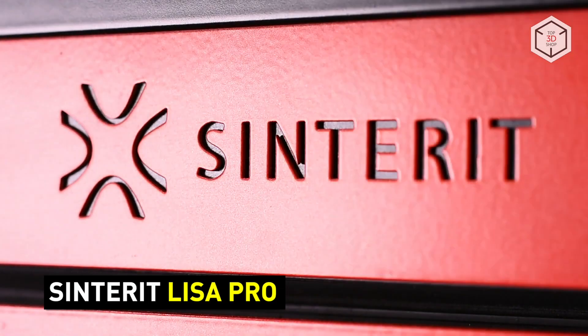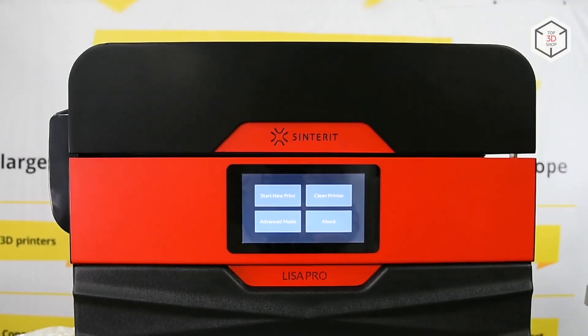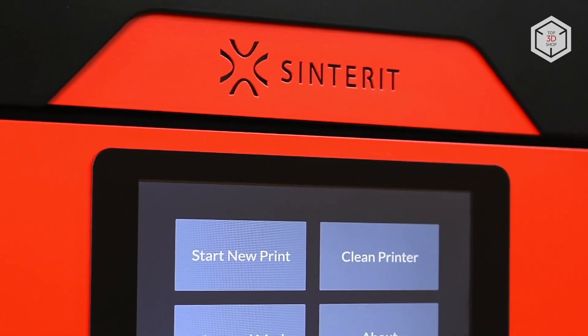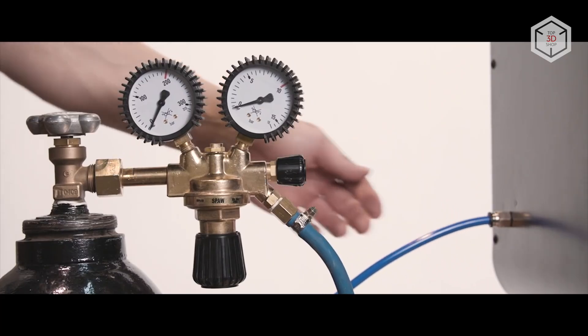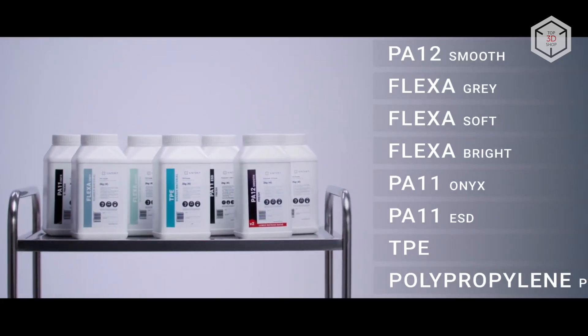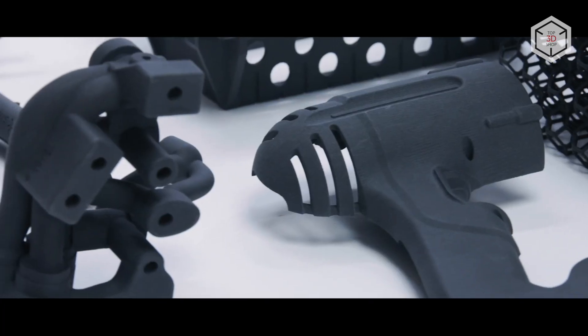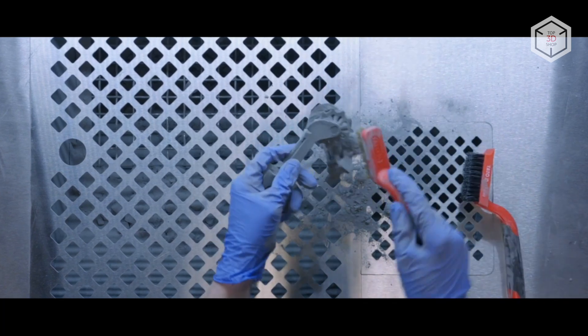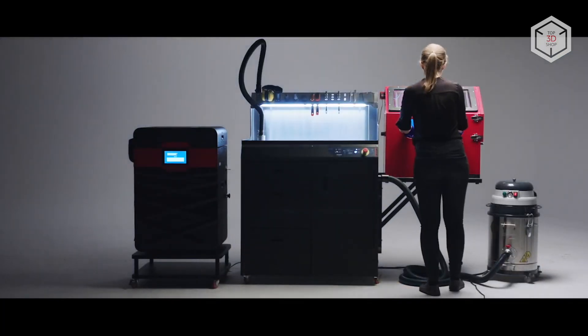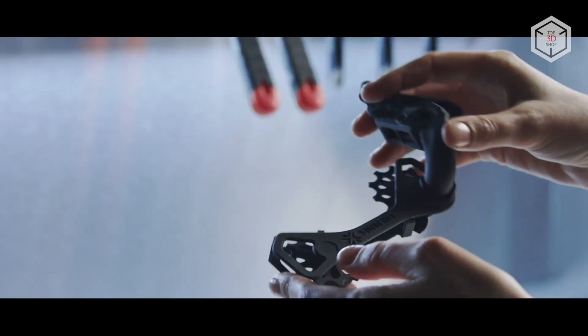The Sinterit Lisa Pro is an upgraded version of the Lisa model, featuring a larger print volume of 110 x 160 x 245 mm. The Lisa Pro is equipped with a built-in gas supply system that injects nitrogen into the print chamber, thus creating a special environment inside the printer and expanding the range of materials that can be used. The Lisa Pro is compatible with nine powder types, including strong and chemical-resistant plastics, and allows you to employ materials produced by different manufacturers. The user can choose between buying a standalone printer or an end-to-end system, including the Sinterit Sieve powder handling solution and the Sinterit Sand Blaster cleaning station.